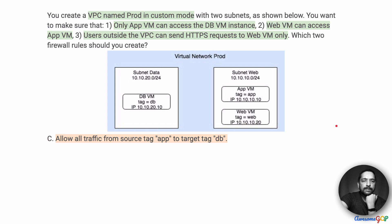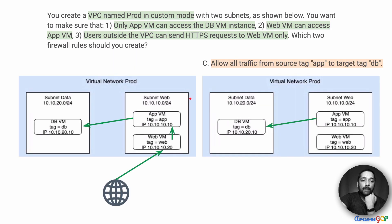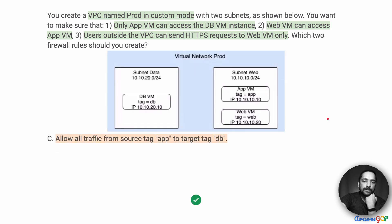Option C suggests that we allow all traffic from source tag app to target tag DB. This requires traffic to flow between these two VMs, and no port has been mentioned, so irrespective of the kind of DB, all data should be able to flow on any port. That matches our requirement — we need traffic flowing from app to DB, and that's exactly what option C gives us. So option C is a definite yes.